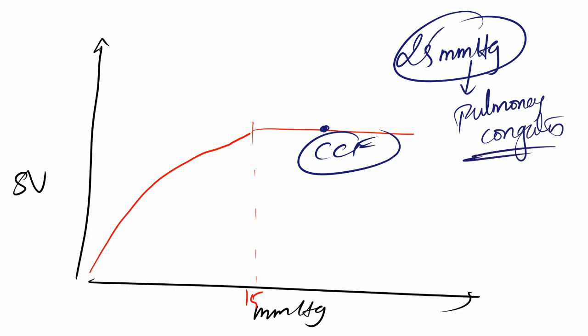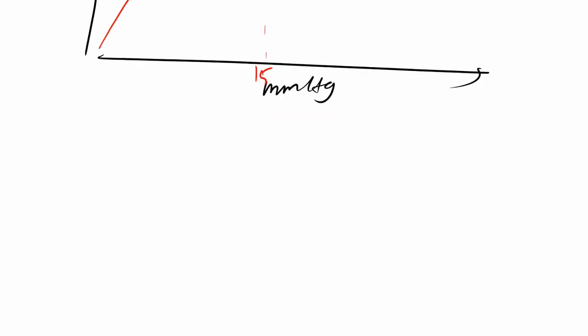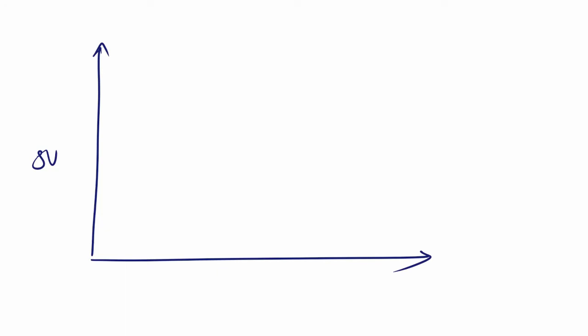So Frank-Starling law as stated: you plot a graph between the stroke volume and the end diastolic volume or end diastolic pressure, and then as the pressure increases so we have stroke volume, and finally after this point it will reach a plateau stage. Well and good.